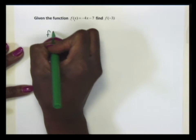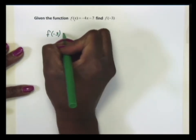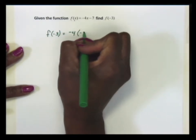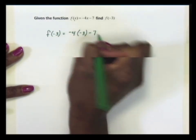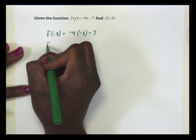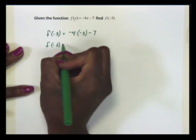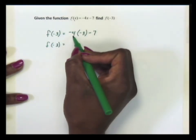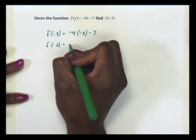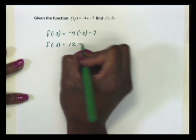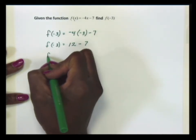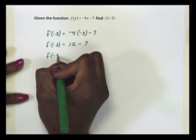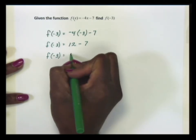So f(-3) will equal -4 times -3 minus 7. f(-3) is equal to, using the order of operations, we have -4 times -3. We have 12 - 7. That makes f(-3) equal to 5.